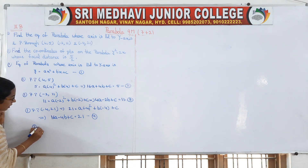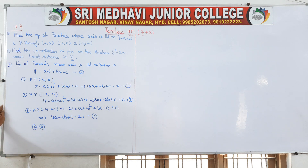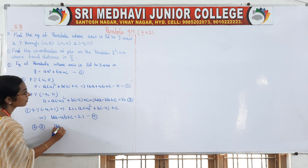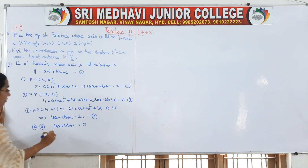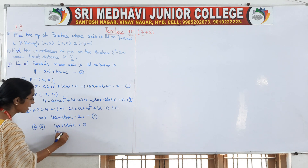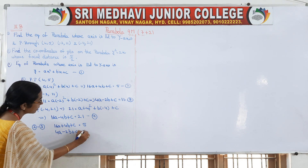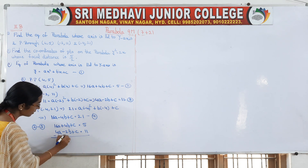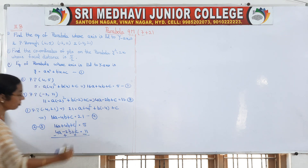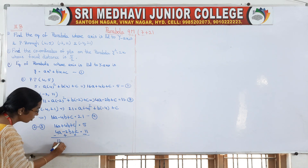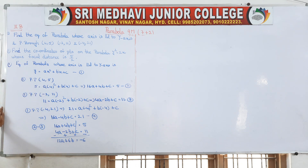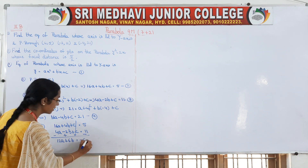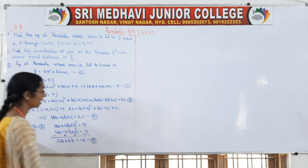Now take equation 2 minus equation 3. Second equation: 16a + 4b + c = 5. Third equation: 4a - 2b + c = 11. Subtracting, c cancels, giving 12a + 6b = -6, since 5 - 11 = -6. Consider this as your fifth equation.